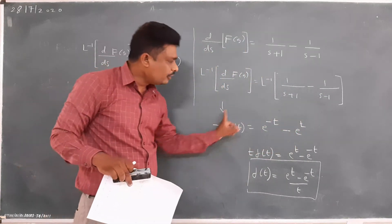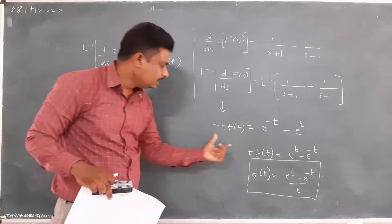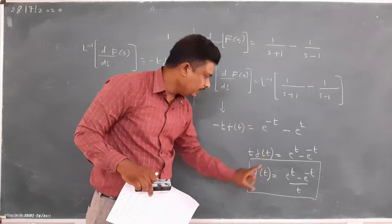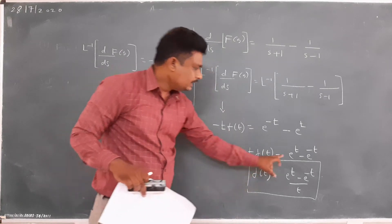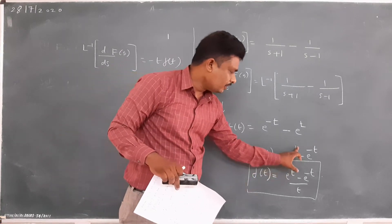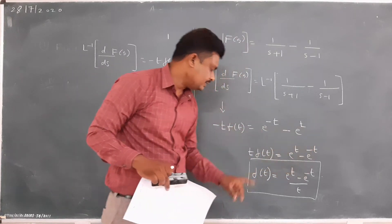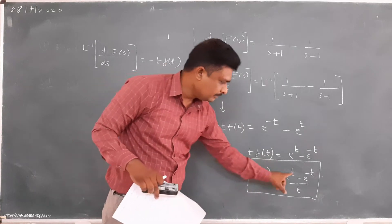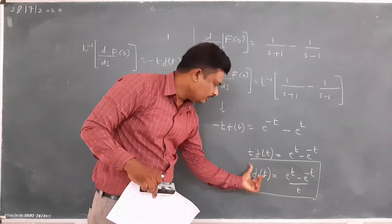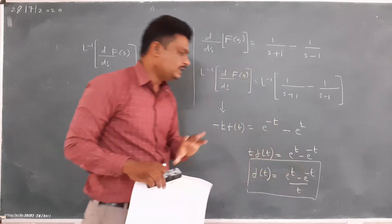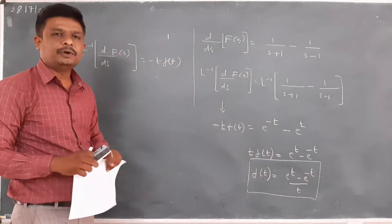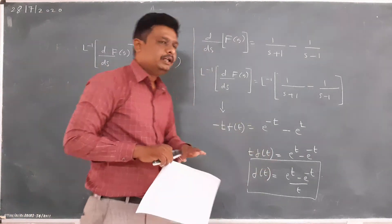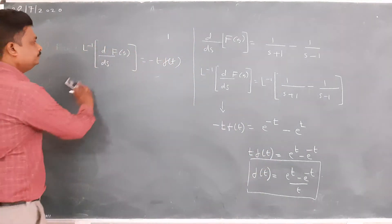Then multiplying minus on both sides it becomes t · f(t) = e^t − e^(−t), therefore f(t) = (e^t − e^(−t)) / t. This is the required answer. Now we will take one more example.